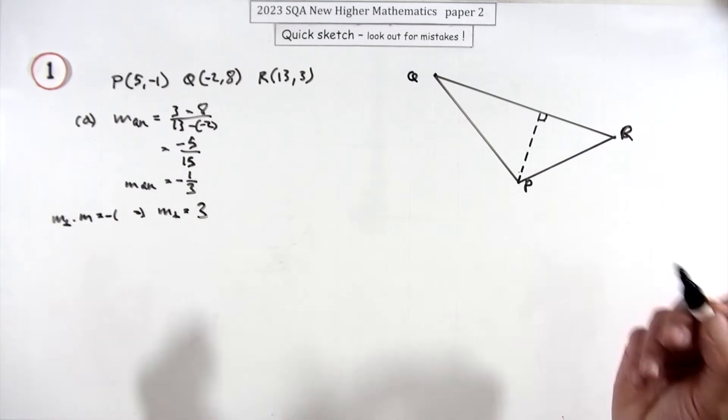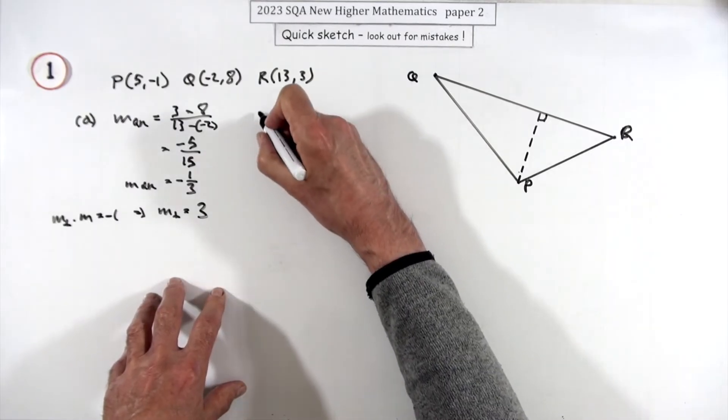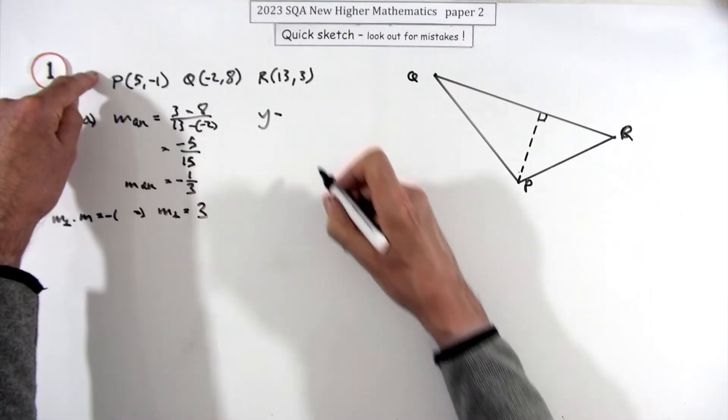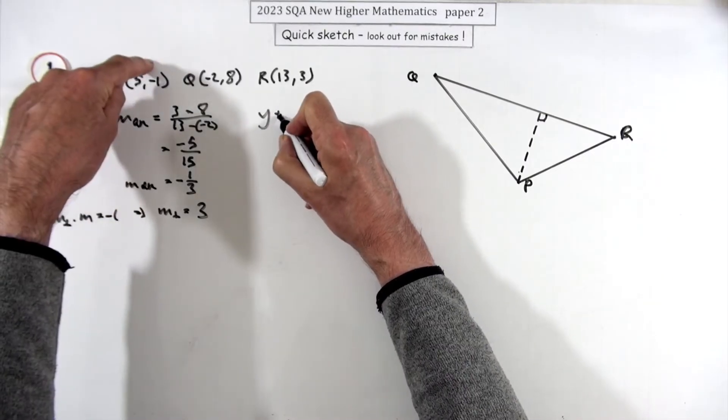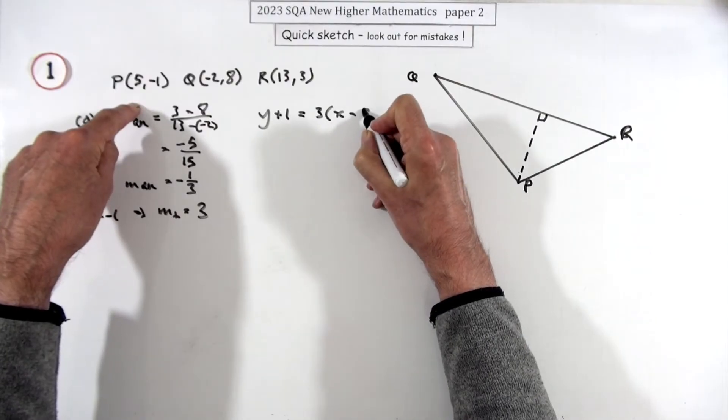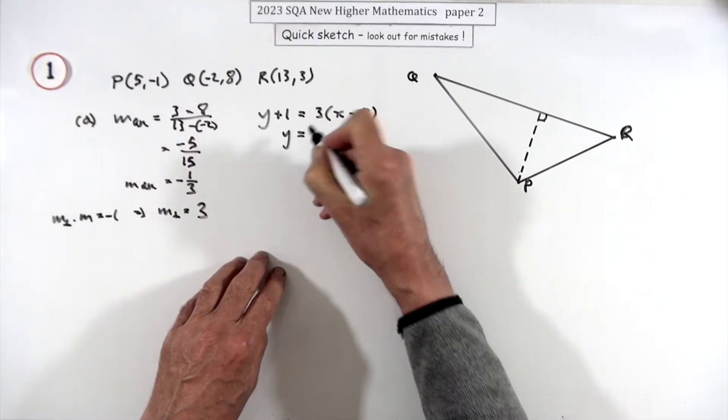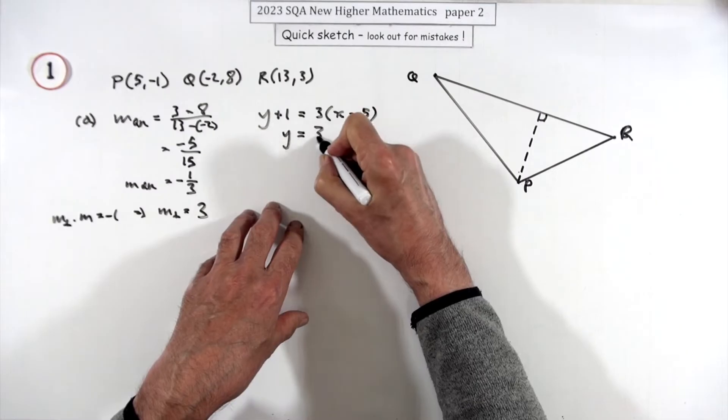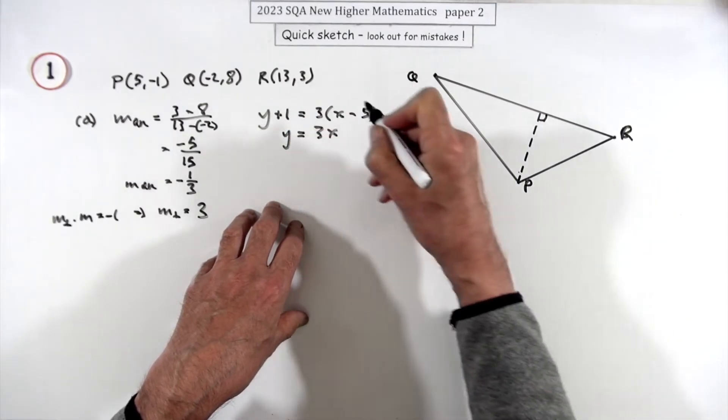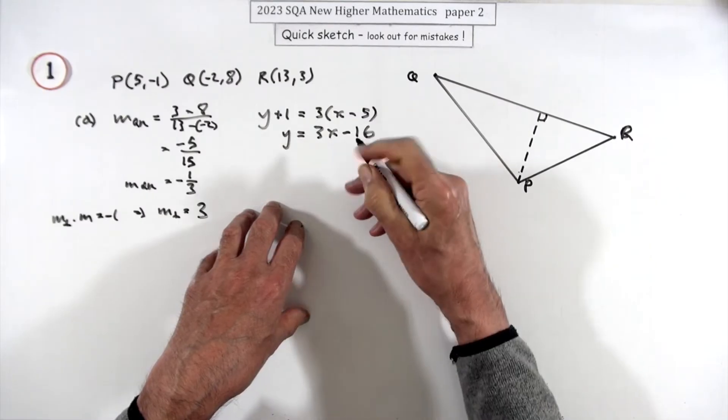Then just pop it in. So here's the line y minus, now it's P I'm using this point, y minus the y coordinate, that'll be y plus 1, is the gradient times x minus the x coordinate. So that's 3x minus the 15, but then minus another one, so minus 16. And that's it.